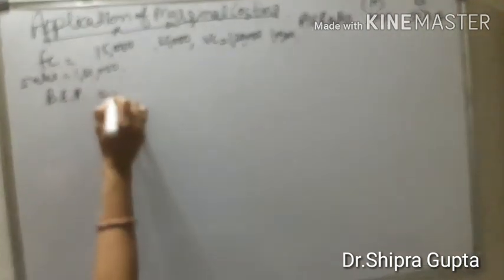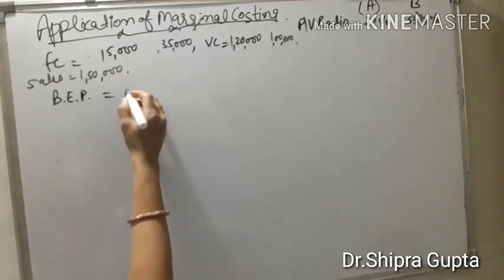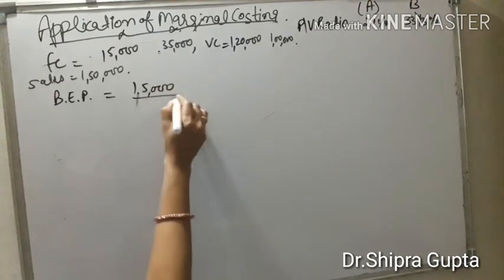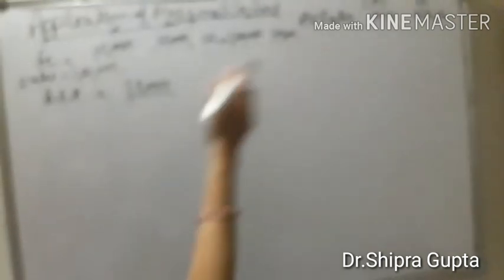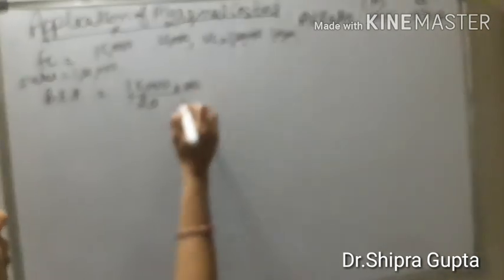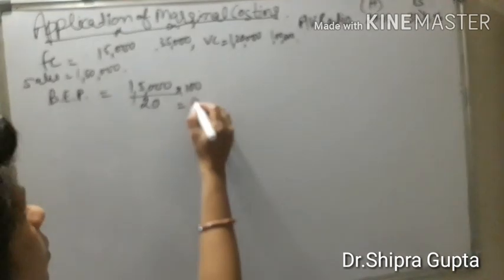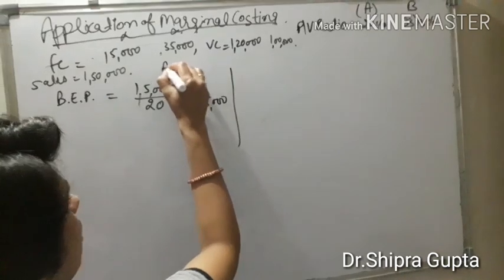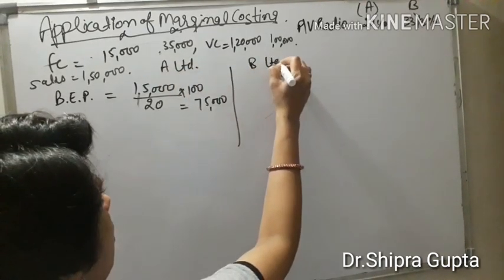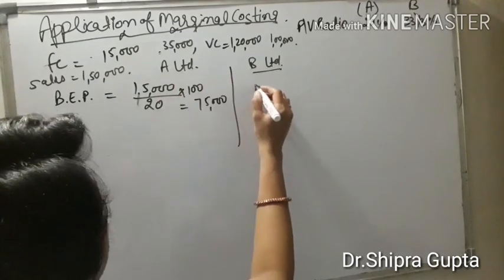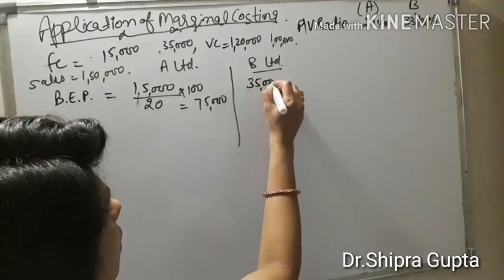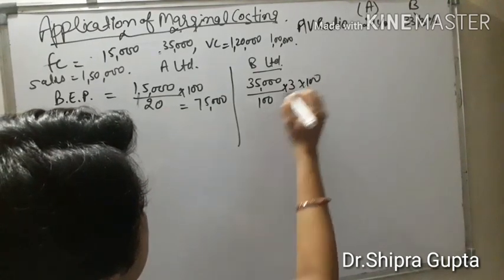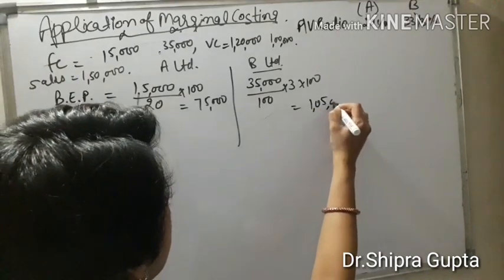Breakeven point equals fixed cost divided by PV ratio. For A Limited: fixed cost 15,000 divided by PV ratio 20 percent, giving a breakeven point of 75,000. For B Limited: fixed cost 35,000 divided by PV ratio 100/3 percent, giving a breakeven point of 1,05,000 rupees.